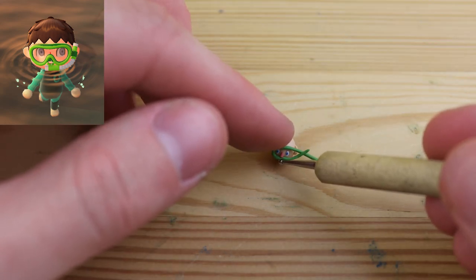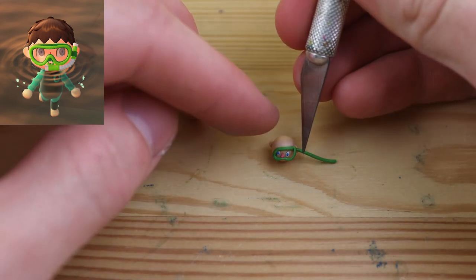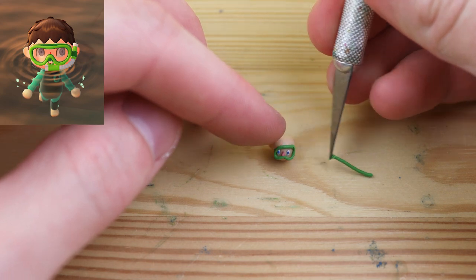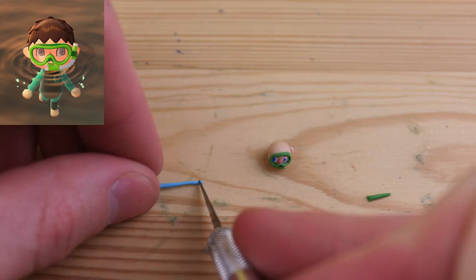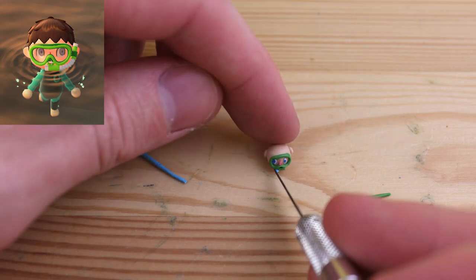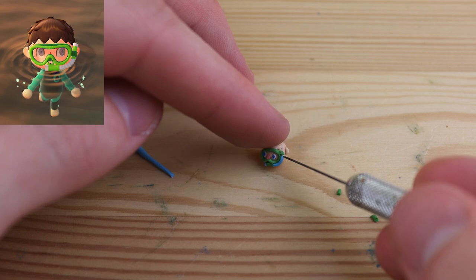And now we have the scuba goggles. It's always really crazy working at this tiny scale because you can't really make much of the stuff with your hands. You mostly have to use your tools. We have the snorkel here, which is just broken down into a couple different little sections.